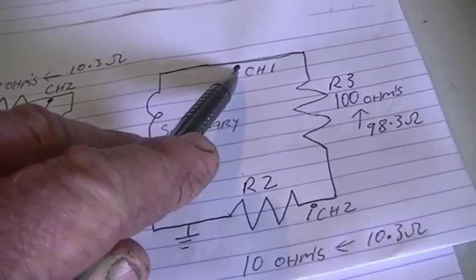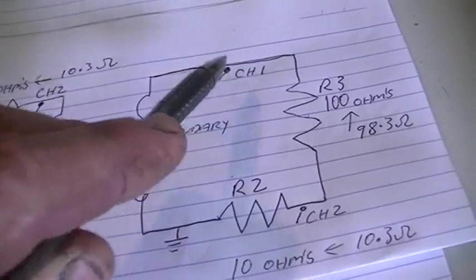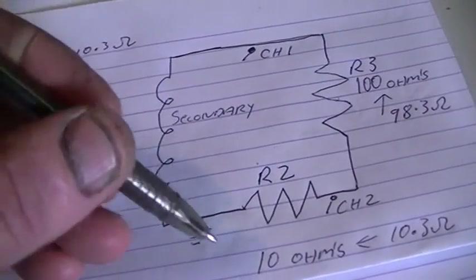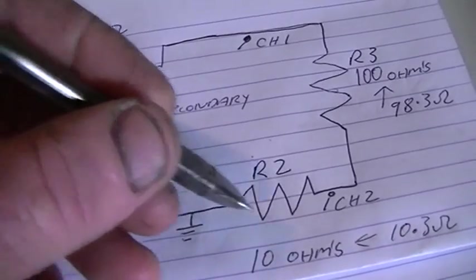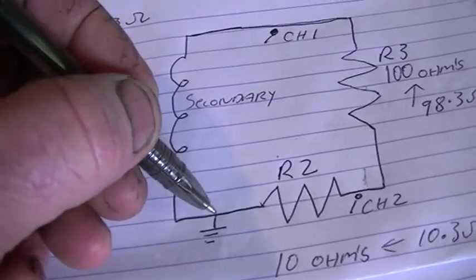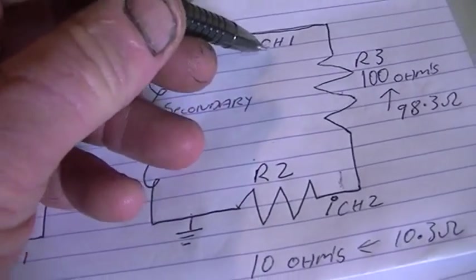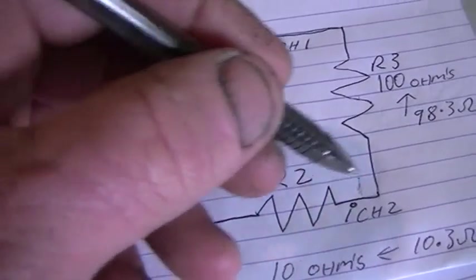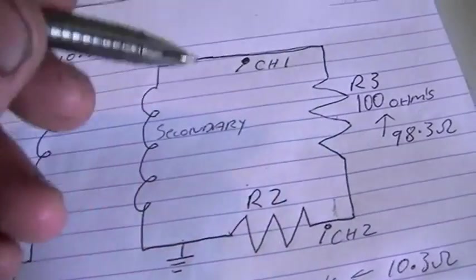And channel 1, also you'll see in the video, sorry my mistake, in the video the grounds are actually here and the probe on channel 2 is here and the probe on channel 1 is here, so measuring across each resistor independently.